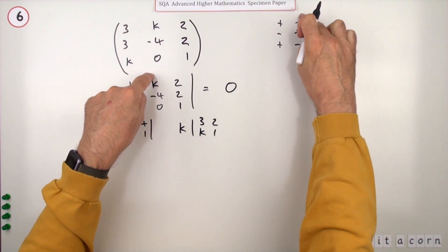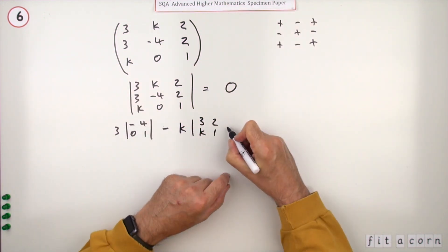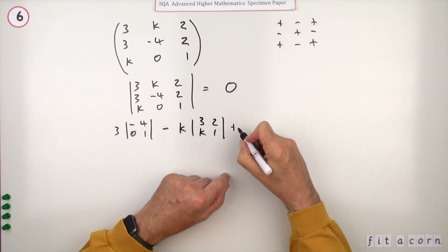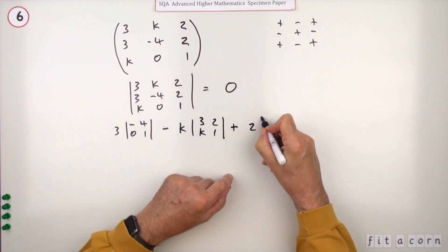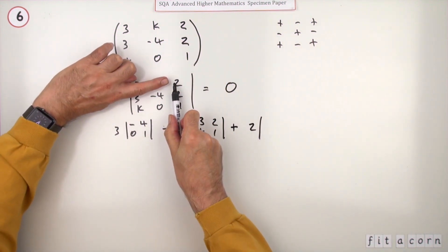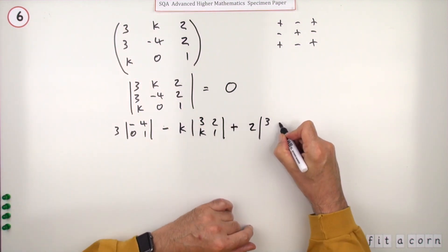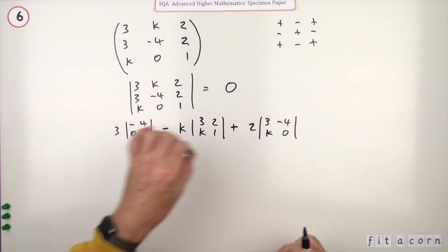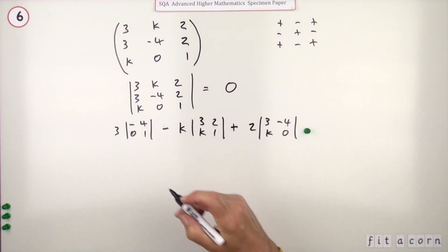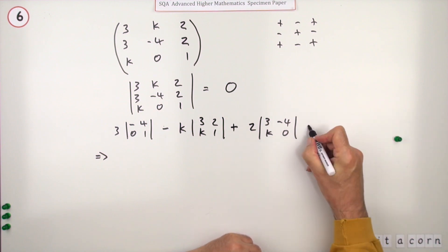But the sign for this one is minus, so negative that, back to plus again for the top row: 2 times its minor: 3, negative 4, k, 0. Now that's given the first mark, so now you need to tidy that up. I should have put equal to zero, although the equal to zero wasn't actually given the mark yet.